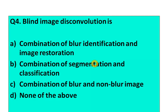Coming to the next question, number four: Blind image deconvolution is — option A: combination of blur identification and image restoration. Option B: combination of segmentation and classification. Option C: combination of blur and non-blur image. Option D: none of the above.